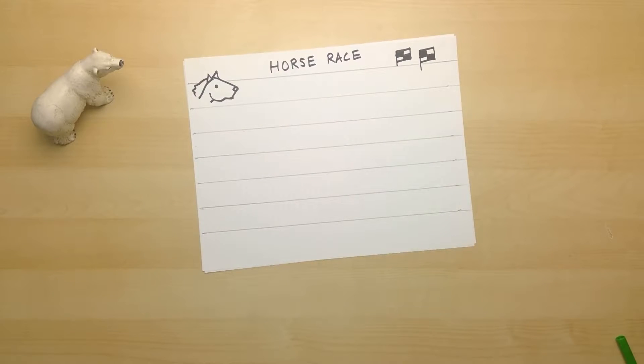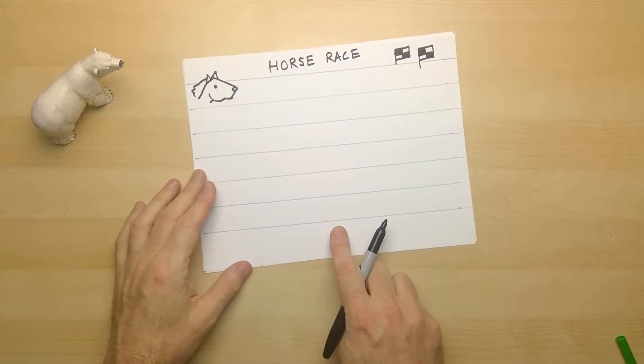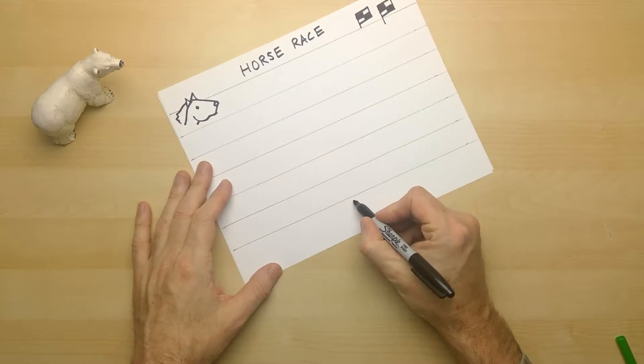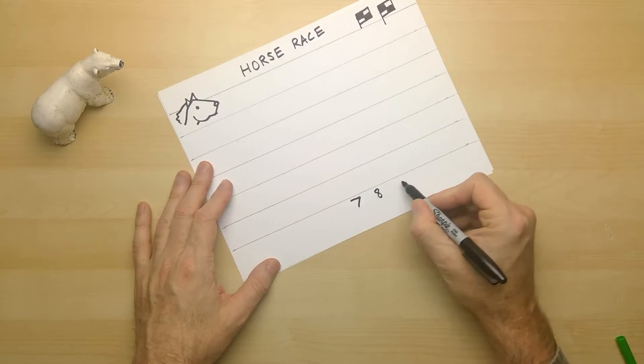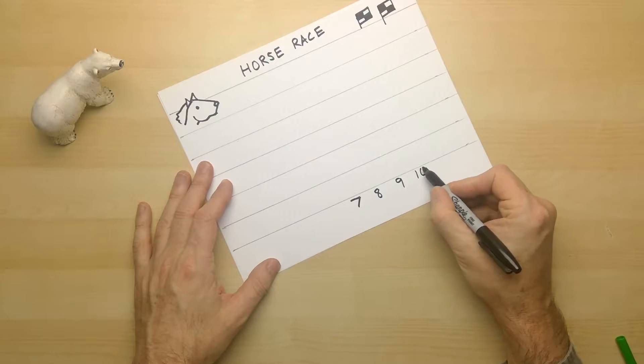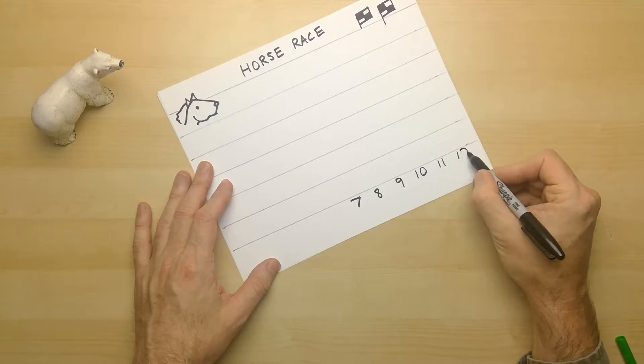So there's our race course. I suppose we'll need some horses as well. Well, let's number them off to start with. I'm going to start right in the middle here. And I'm writing the number seven. And then I'm going to count up. Eight, nine, 10, 11, and 12.